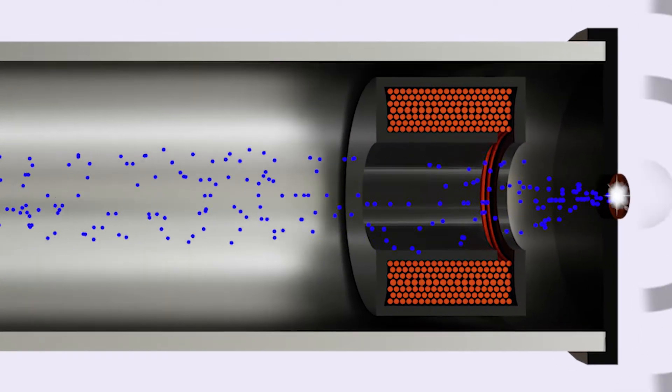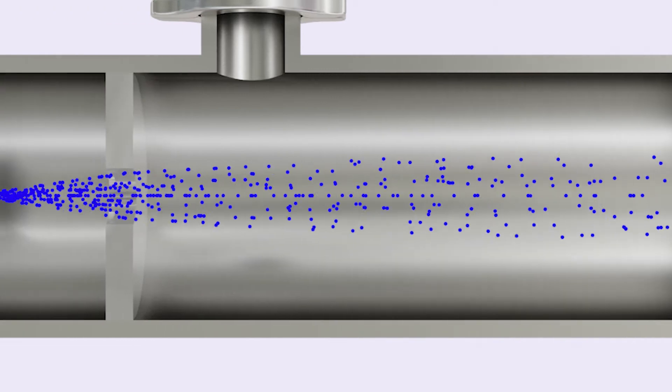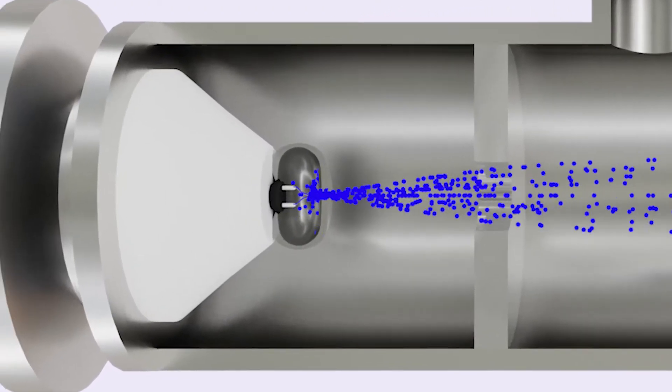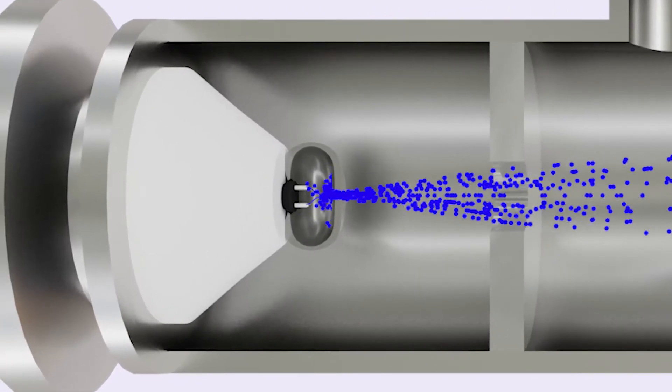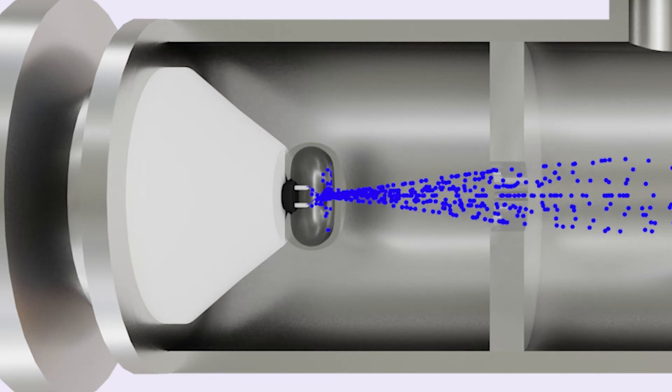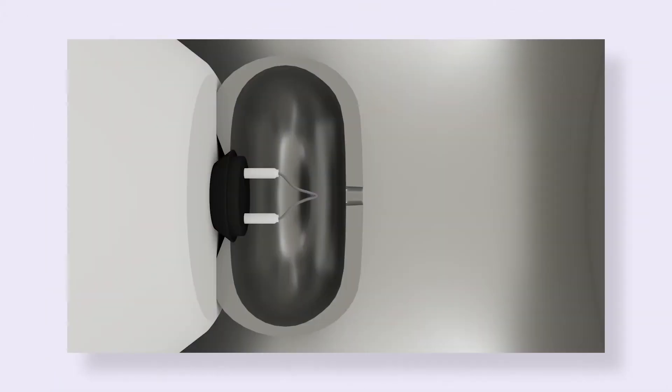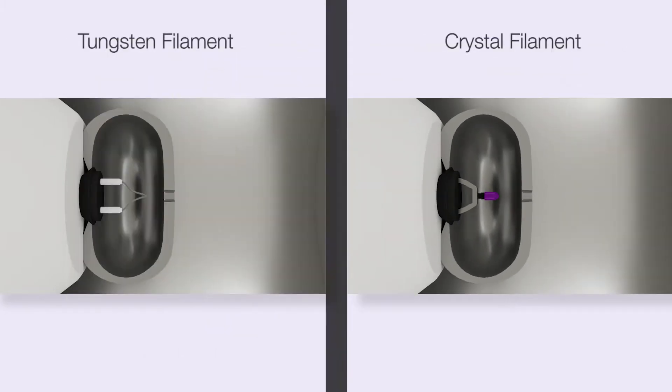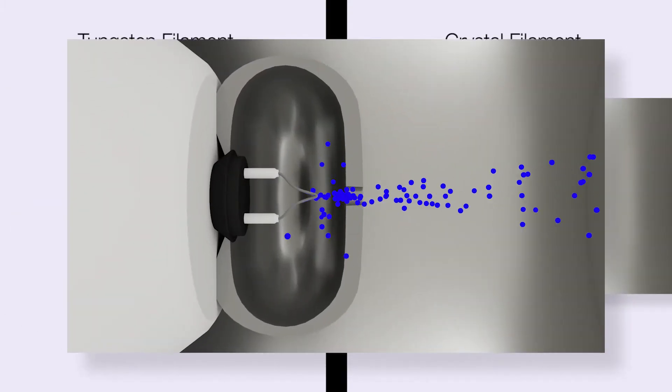Choosing the right electron source is vital to the quality of the x-ray images. Two technologies are commonly used: tungsten filaments and crystal filaments. Tungsten filaments have been used until recently, however they emit electrons over a wide region.